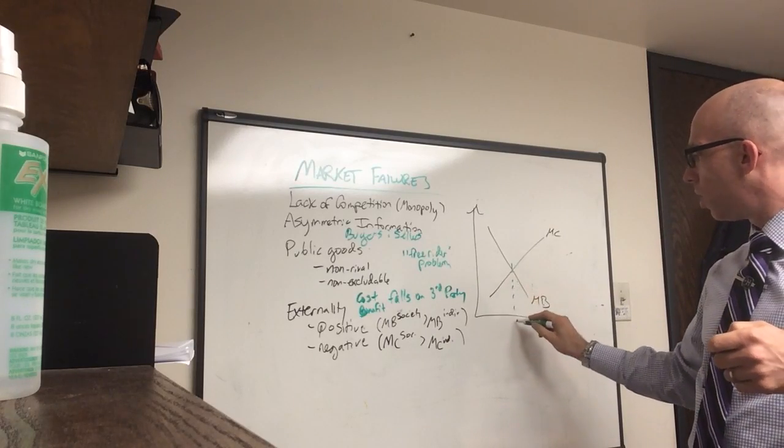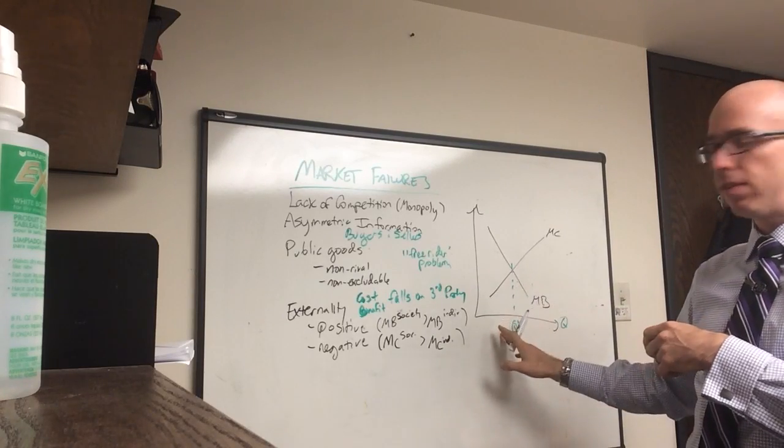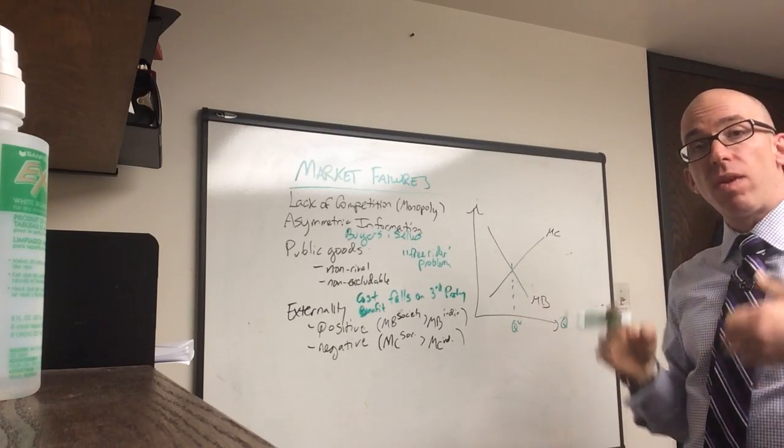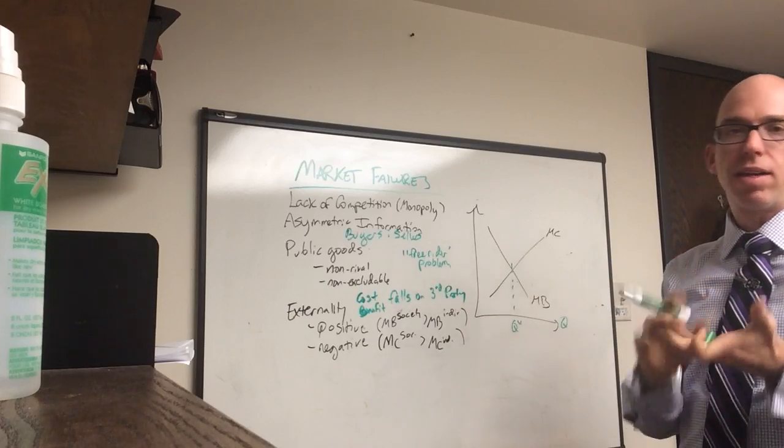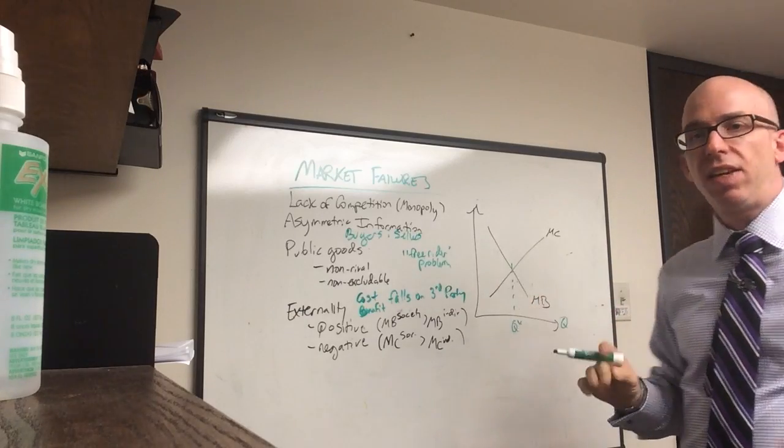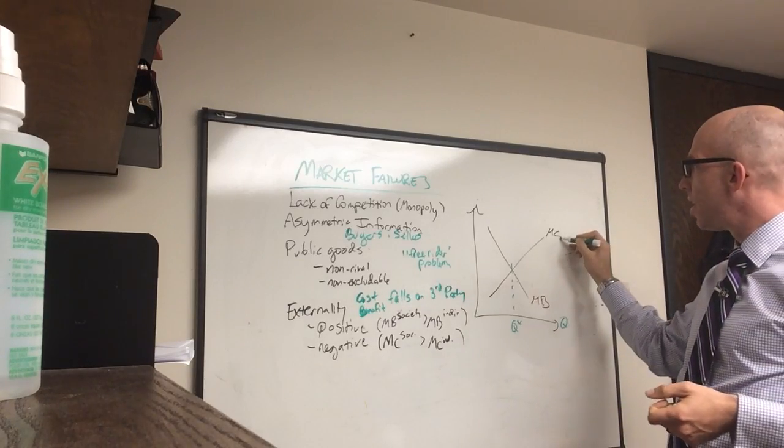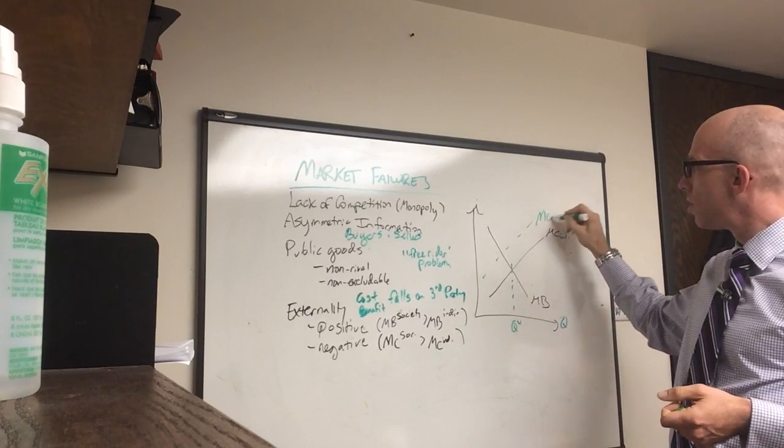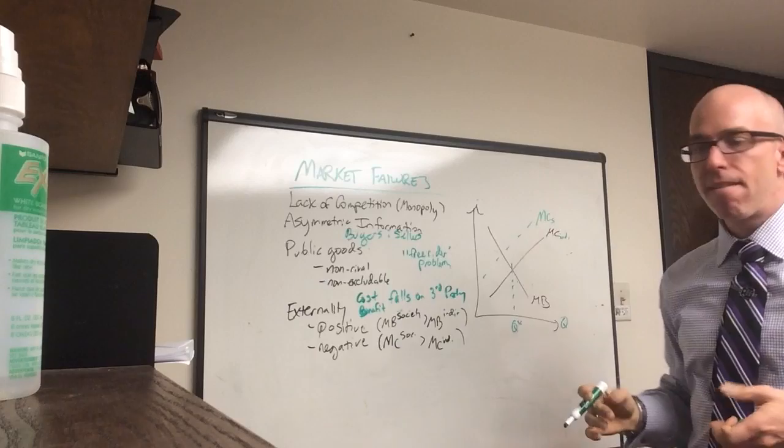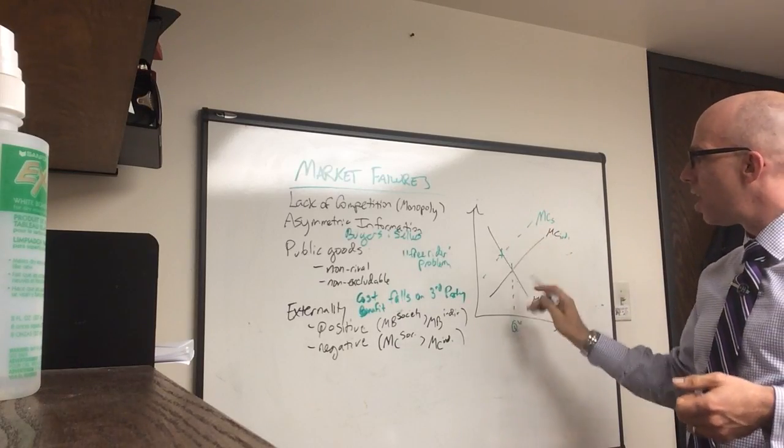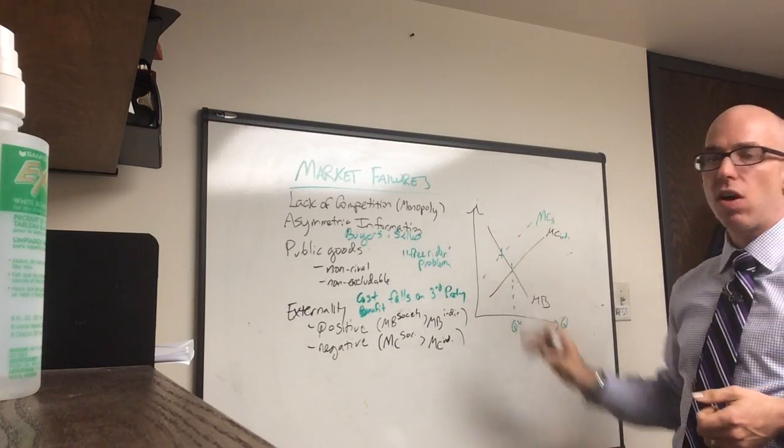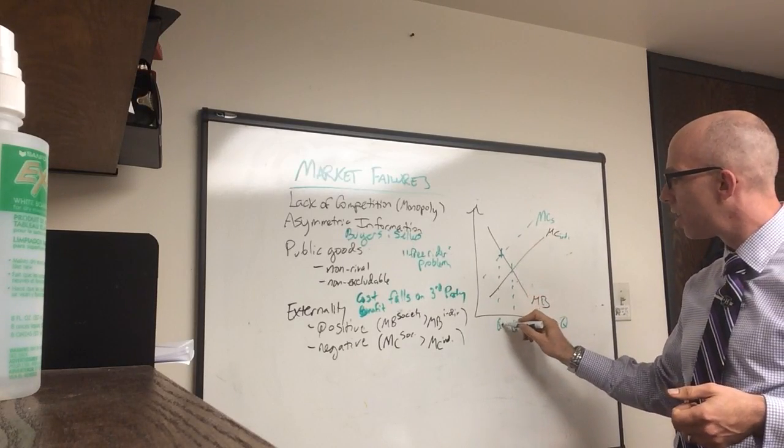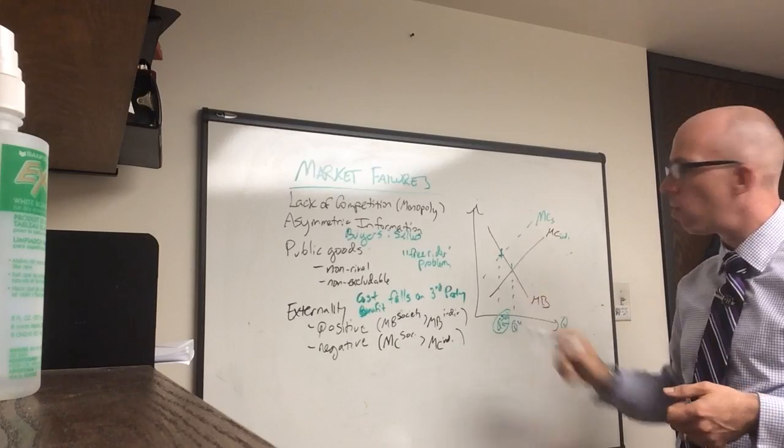So if you have an individual, your optimal quantity of this activity is drawn right here. But what would society say? They would say if you factor in our costs to medical bills or just plain inconvenience, then you can actually say that the individual costs are lower and the cost to society is bigger, and so this is the cost that includes everybody else. What that does is it raises the cost curve to have a higher crossing point. In this case, society's optimal quantity is less.